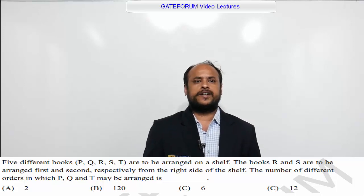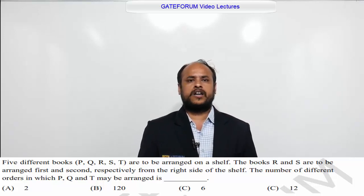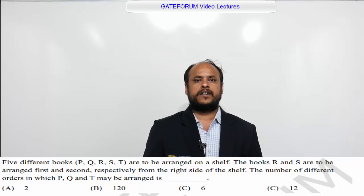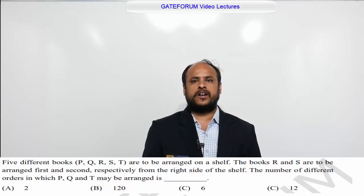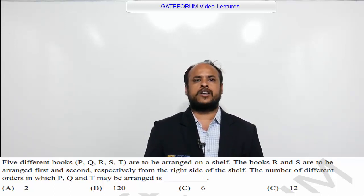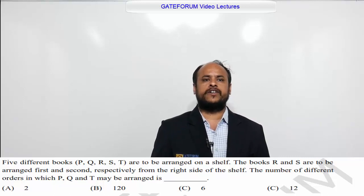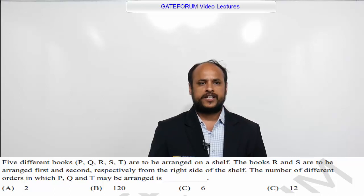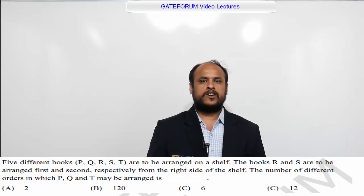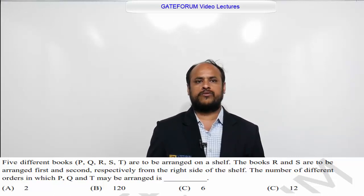This question belongs to ECE. The question is: five different books P, Q, R, S, T are to be arranged on a shelf. The books R and S are to be arranged first and second, respectively, from the right side of the shelf. The number of different orders in which P, Q and T may be arranged is? Option A is 2, option B is 120, option C is 6, option D is 12.